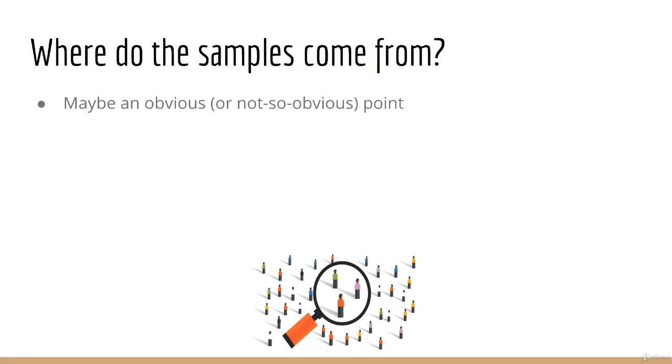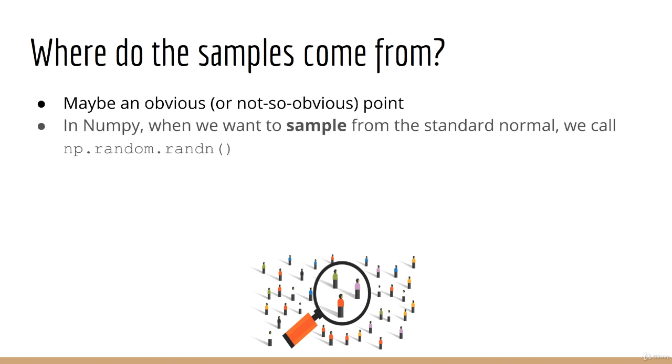Now one obvious but maybe not so obvious point. Where do these samples come from? You may recall that when we're in NumPy and we want to sample from say the standard normal, we can simply call the function np.random.randn. But what does it mean to sample a return?